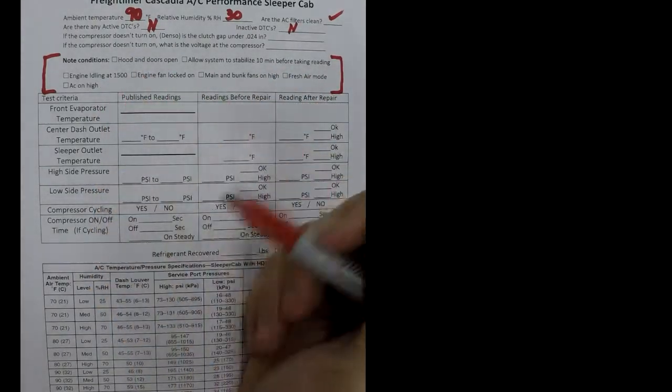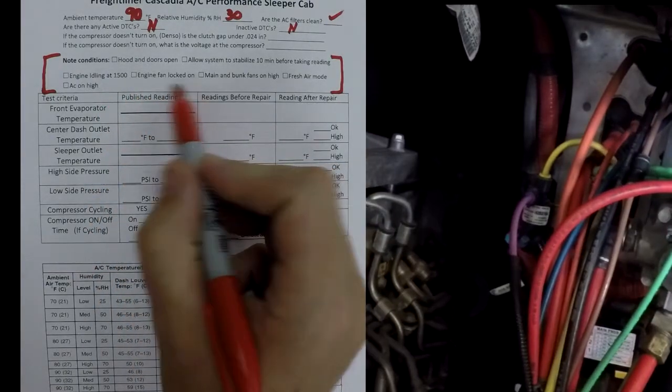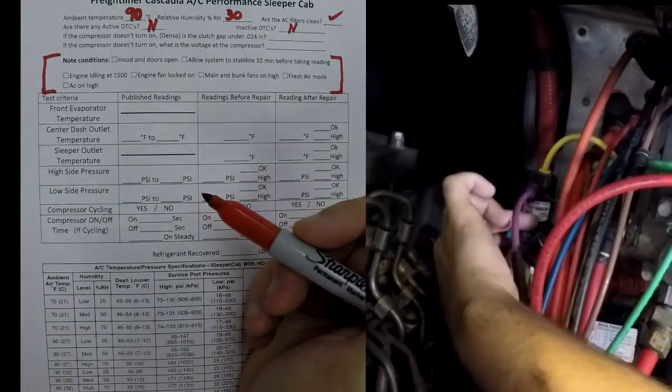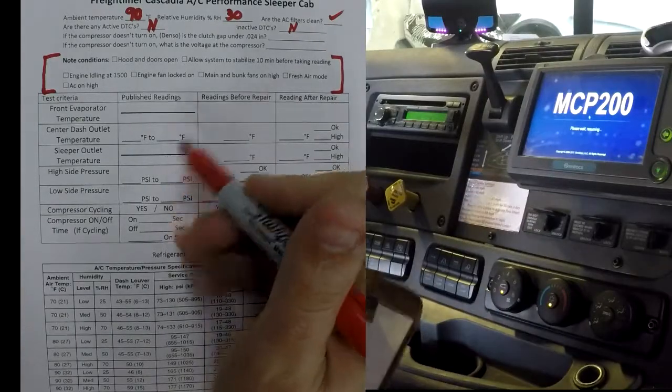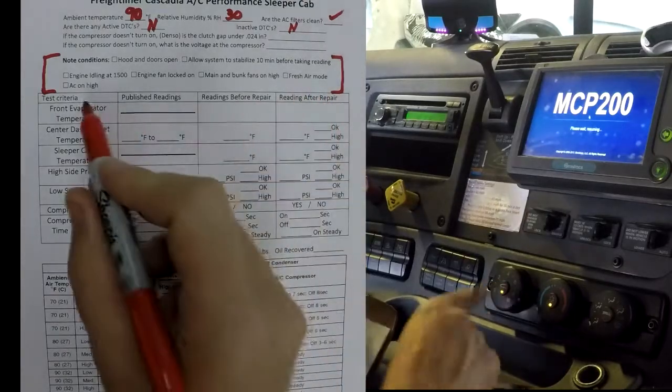Engine idling at 1,500. So just run it at 1,500. Fan locked on, the engine fan locked on. You can do that by unplugging the fan solenoid. Main and bunk fans on high. Fresh air mode, AC on high.